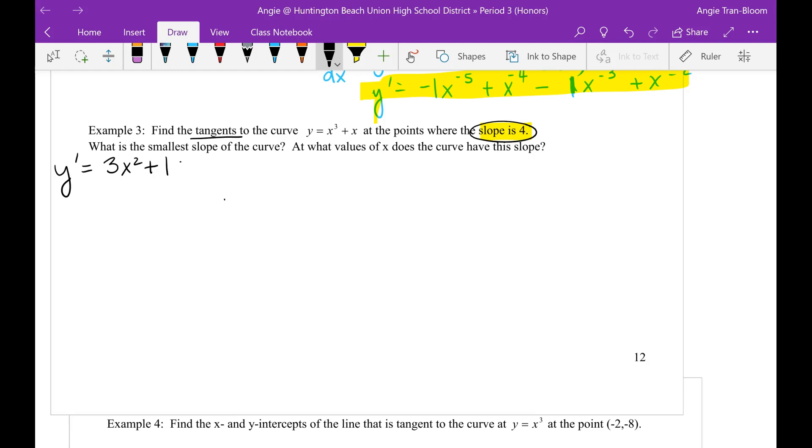The slope is 4. So what I'm going to do is I'm going to set it equal to 4. My job right now is to find the point or points that this curve has a slope of 4. So let's see how many points I'm going to come up with. So to solve for x, I'm now going to move 1 to both sides. So 3x squared equals 3, divide both sides by 3, x squared equals 1.